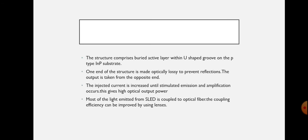The output is taken from the opposite side. In the case of a laser, stimulated emission takes place and there is a reflective side to provide feedback. But in the case of the superluminescent LED, one end of the structure is made optically lossy to prevent reflections, so there will be no lasing action, and the output is taken from the other side.